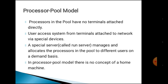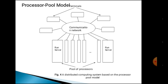In the processor pool model, there is no concept of a home machine. Several terminals and run servers are connected to the communication network. Clients can log in to any one of the terminals, which are displaced workstations or X terminals. All services are dispatched to the servers, and on the server side, the necessary number of processors are allocated to each user from the pool of processors.